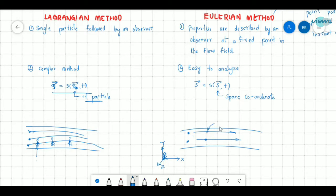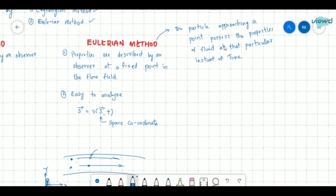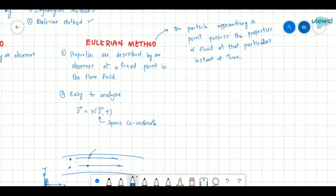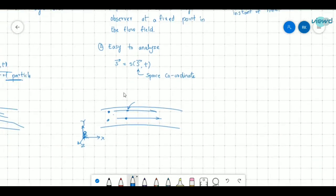So here there is a statement. The particle approaching a point possesses the properties of fluid at that particular instant of time. So what is it saying? Suppose this point - this is not a particle, that is a coordinate of the point. So that is a function of space coordinate and time. This is space coordinate and this is not of a particle.